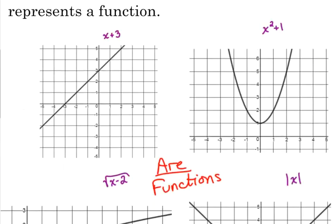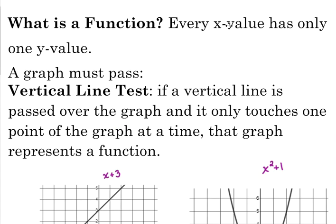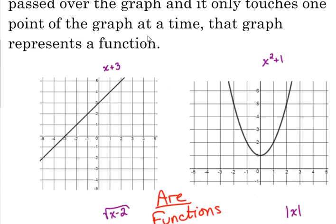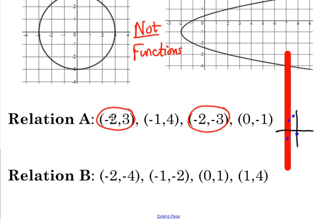There are two y values for the x value of negative 2. Our definition, if you look back at the top of your page, every x value has only one y value. We'll look at this relation. One x value, x equals negative 2, two different y values. So relation A is not a function.